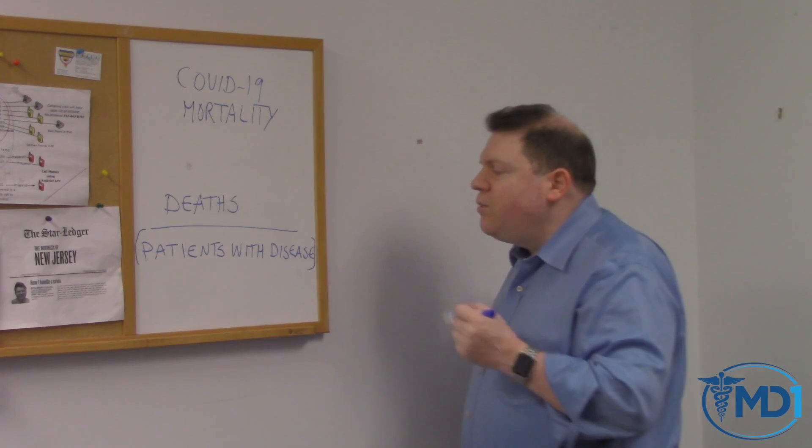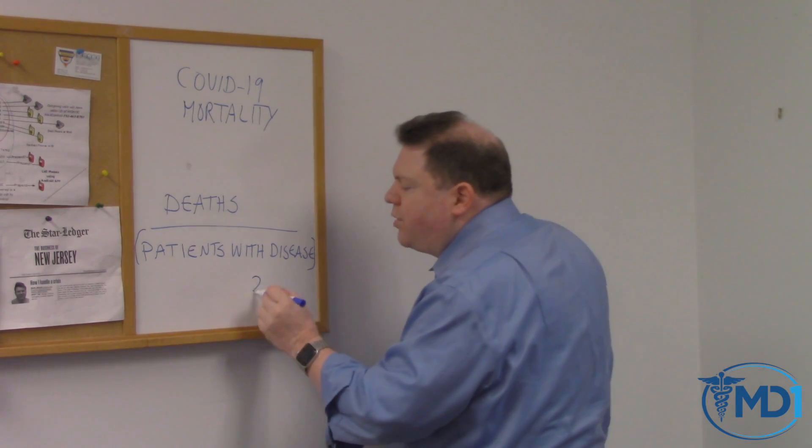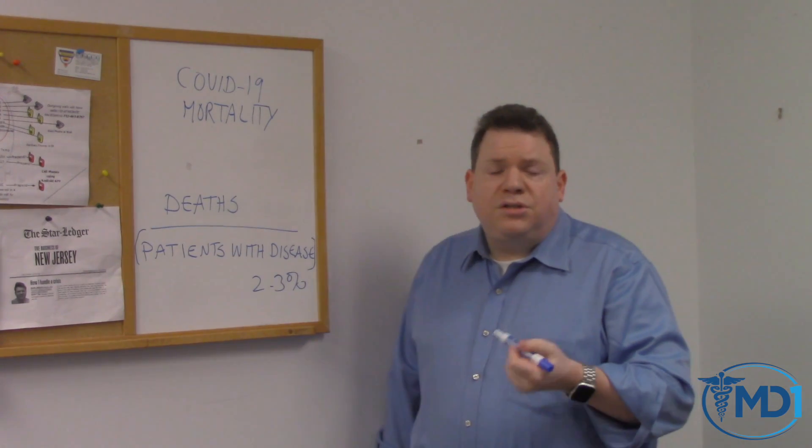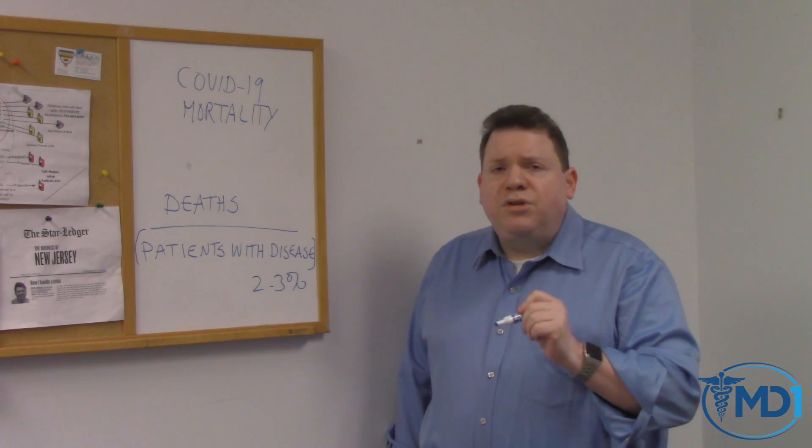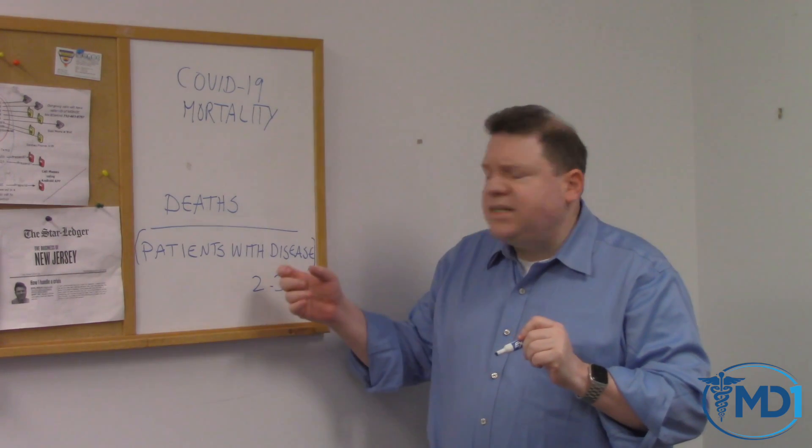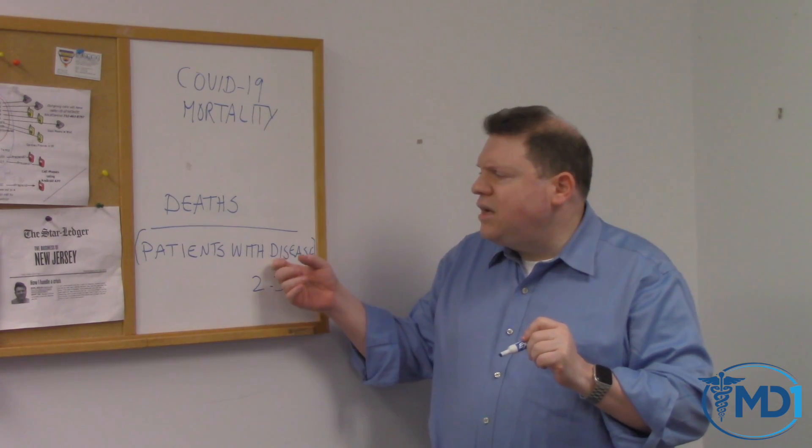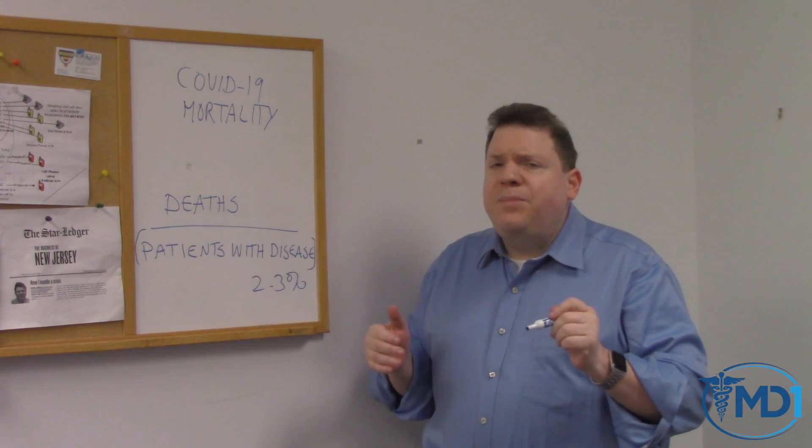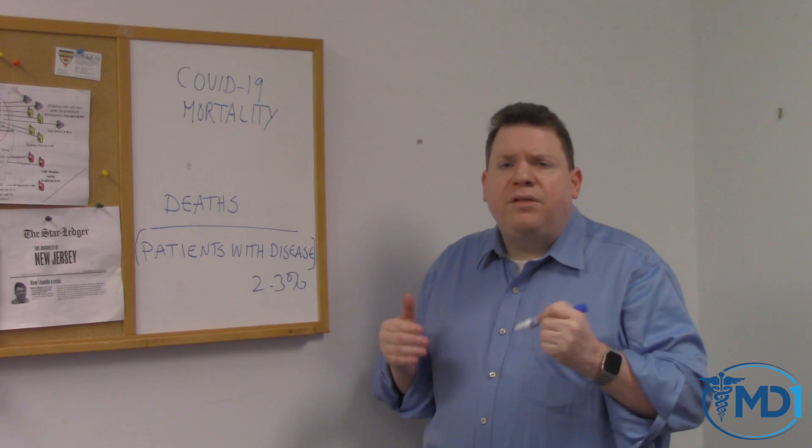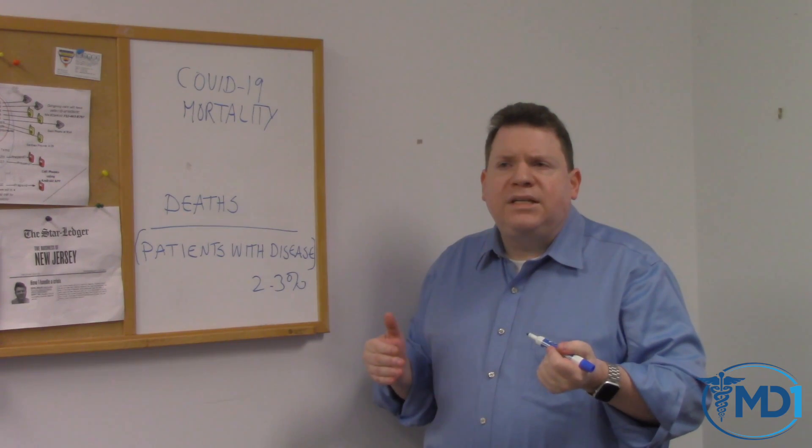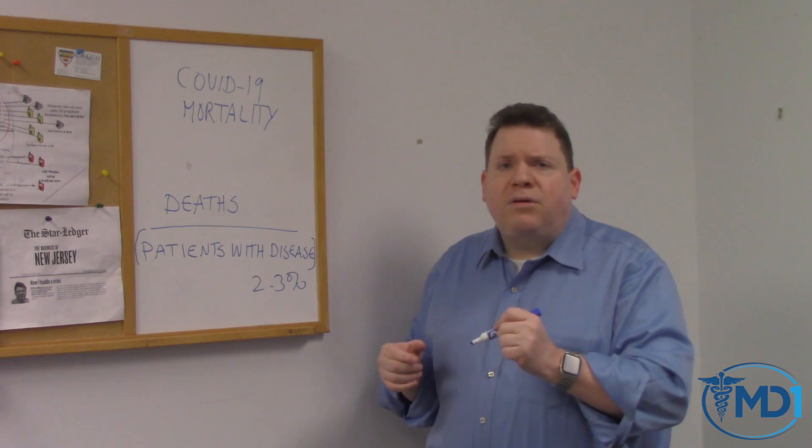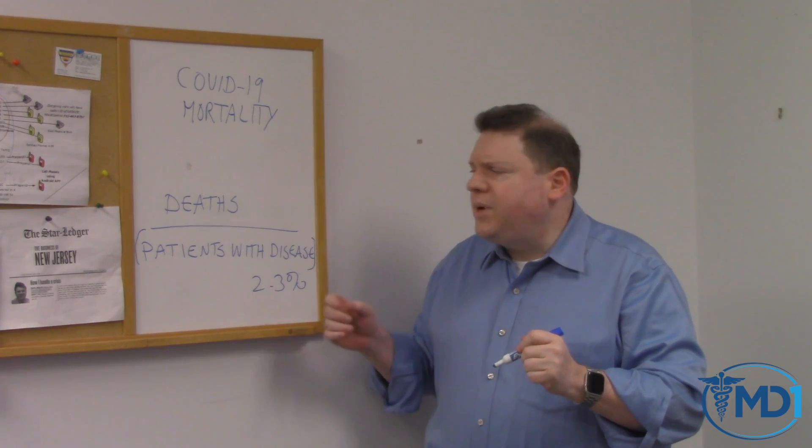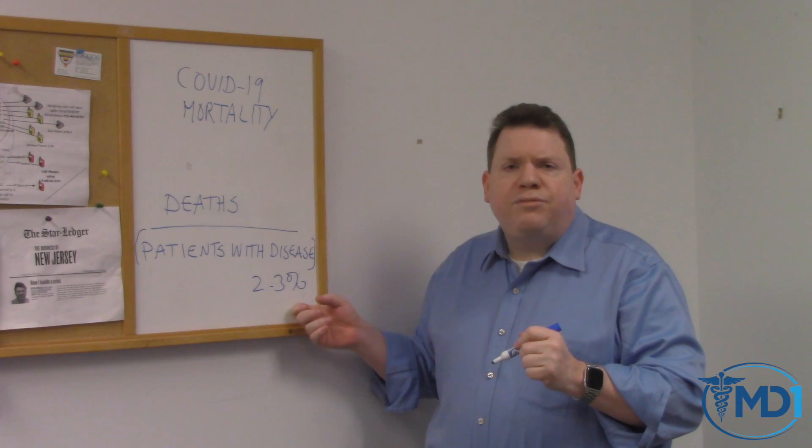Right now it was thought that it was somewhere between two to three percent. But those numbers were in other countries, such as China. We don't know what these true numbers are in the United States. As we start testing more and more people, this number, the patients with the disease, is going to go up dramatically. Many people will get very anxious when they see on TV more people with the disease. I'm actually going to start to feel a little bit better because that will demonstrate what the true mortality is, and I believe it's going to be a much lower number than two to three percent.